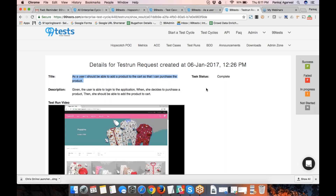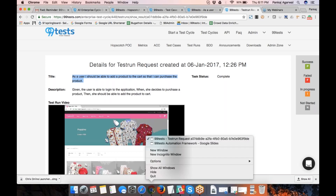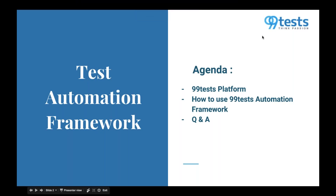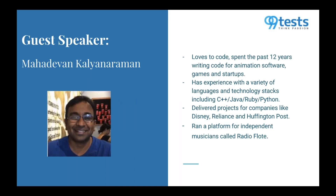What I will do now is make Maha, who is our guest speaker today, the presenter, who will be taking us through the demo of the actual automation. Let me introduce Maha quickly. Maha has a lot of experience in the software industry and his main passion is coding. He has spent the past 12 years writing code for animation software, games, and start-ups. He has experienced a variety of languages including C++, Java, Python, and Ruby. He has worked with Fortune 500 clients like Disney, Alliance, and Huffington Post, and he runs an independent platform for musicians called Radio Pro. Let me pass on to Maha and make him the presenter.